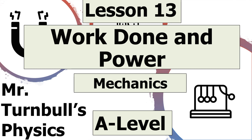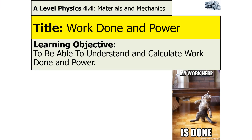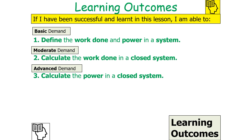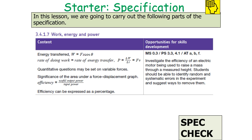Hello and welcome to this lesson on work done and power, which is part of the mechanics topic in AQA A-level physics. In today's lesson we're going to understand and calculate both work done and power. If we are successful, we'll be able to define work done and power in a system, calculate the work done in a closed system, and calculate the power in a closed system. We'll be looking at AQA A-level physics specification 3.4.1.7: work, energy and power.